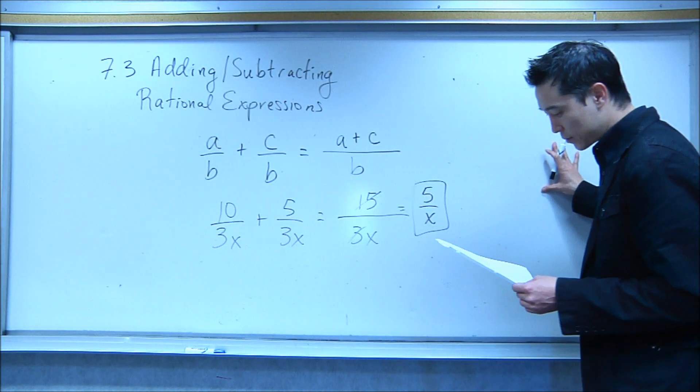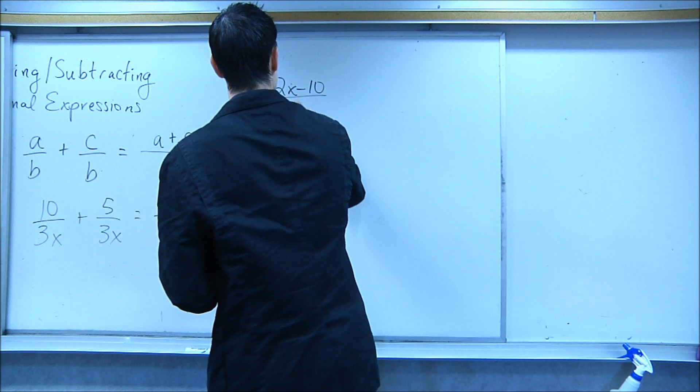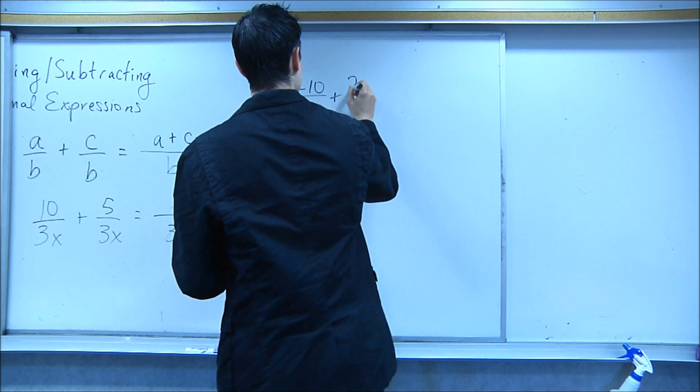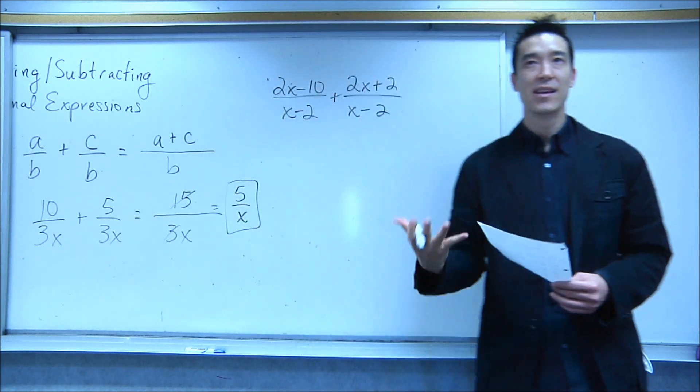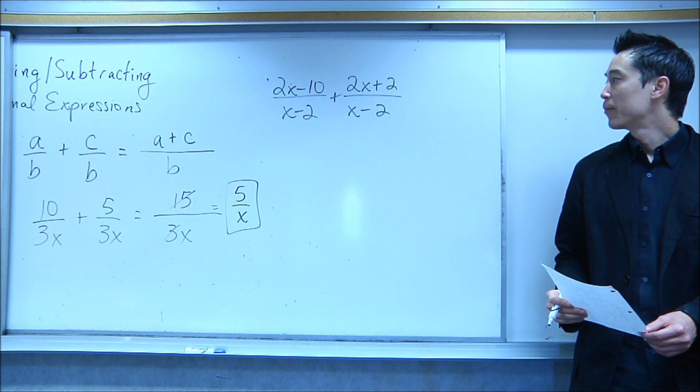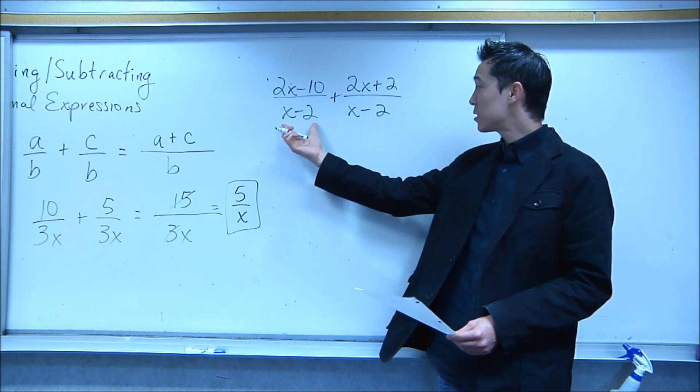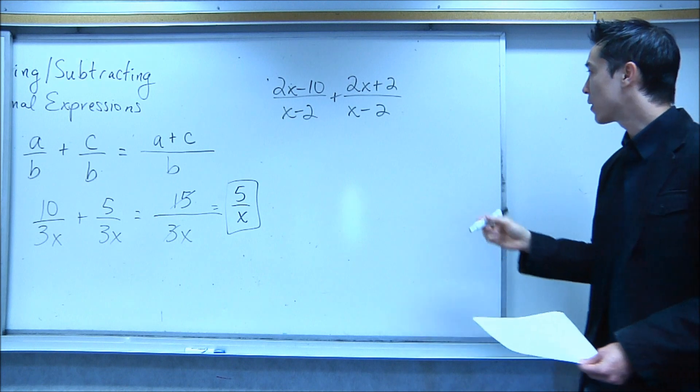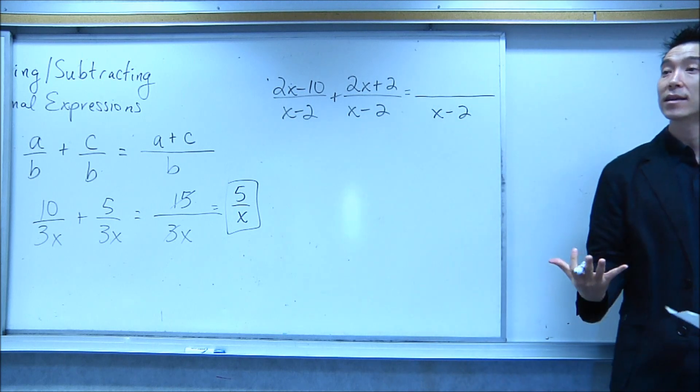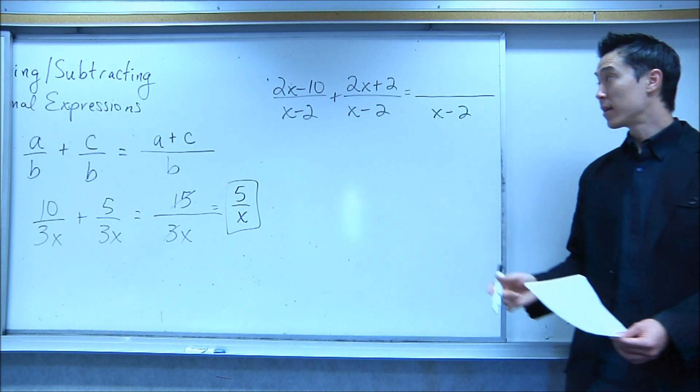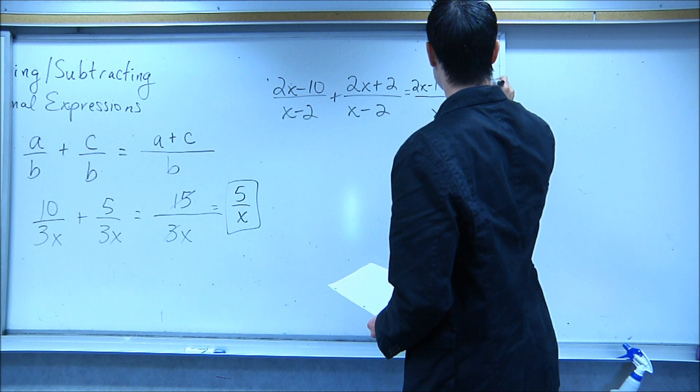Alright, let's take a look at this problem. 2x minus 10 over x minus 2 plus 2x plus 2 over x minus 2. Just like the last example, it's two fractions. Both the fractions have the same denominator of x minus 2. Great. So what I'm going to do is combine it. You keep the denominator the same. It's still x minus 2. You don't do anything with that. Then you want to add everything in the top. So I have 2x minus 10 plus 2x plus 2.